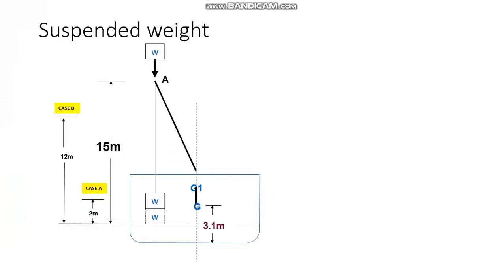So this is what we call a situation of suspended weight and this is the figure which we have constructed which we understand from the data given in this question. So we have a vessel with some weight W at some position on the vessel and we have a derrick which is lifting this weight, initially in case A to 2 meters and then in case B to 12 meters above the initial position.